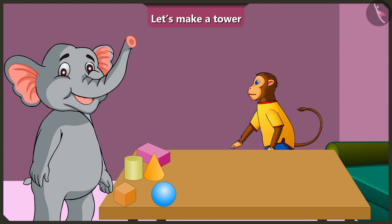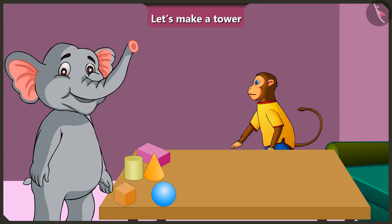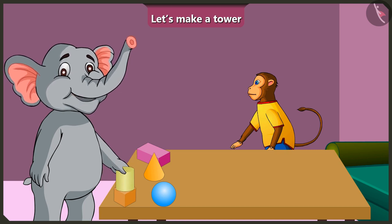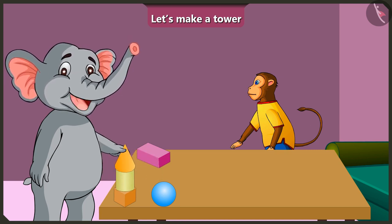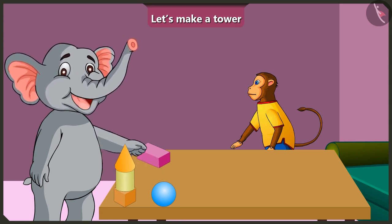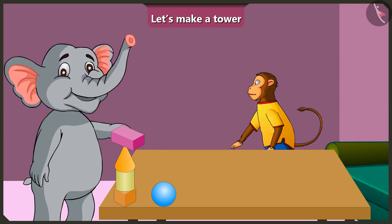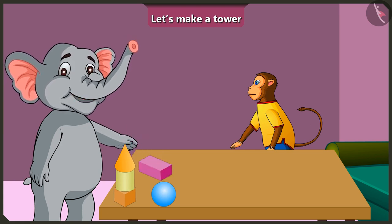Look, first I place the cube. Above it the cylinder. Above it the cone-shaped. Above it the cuboid. Oh oh oh, it fell down. Why did this happen?